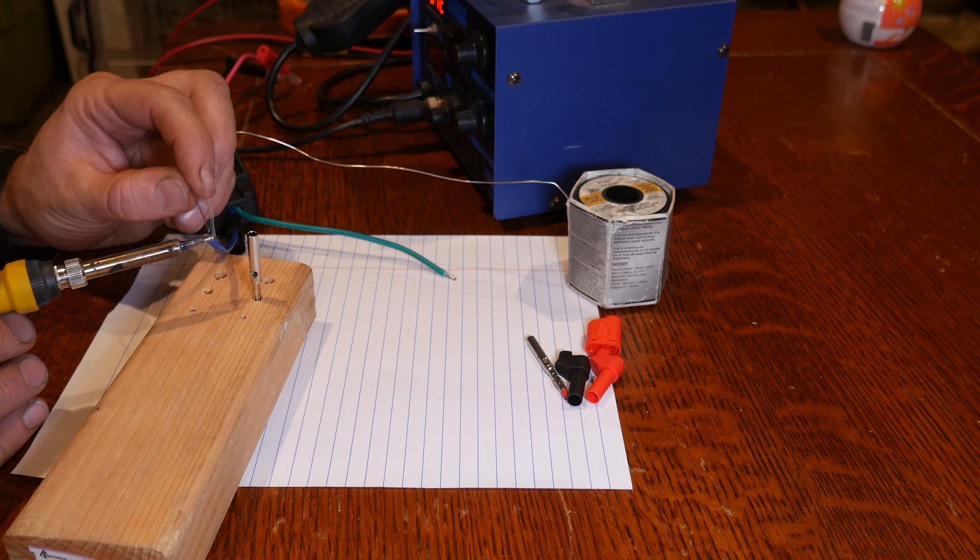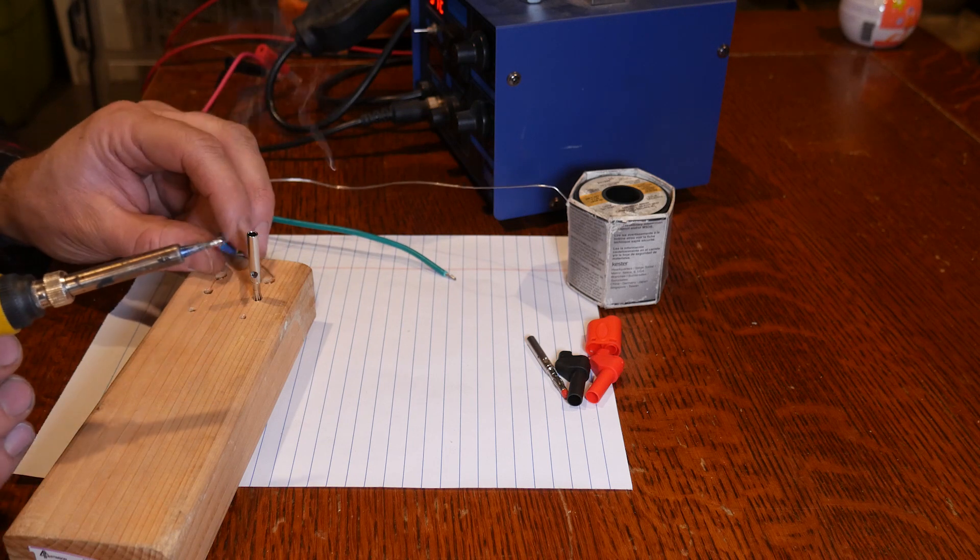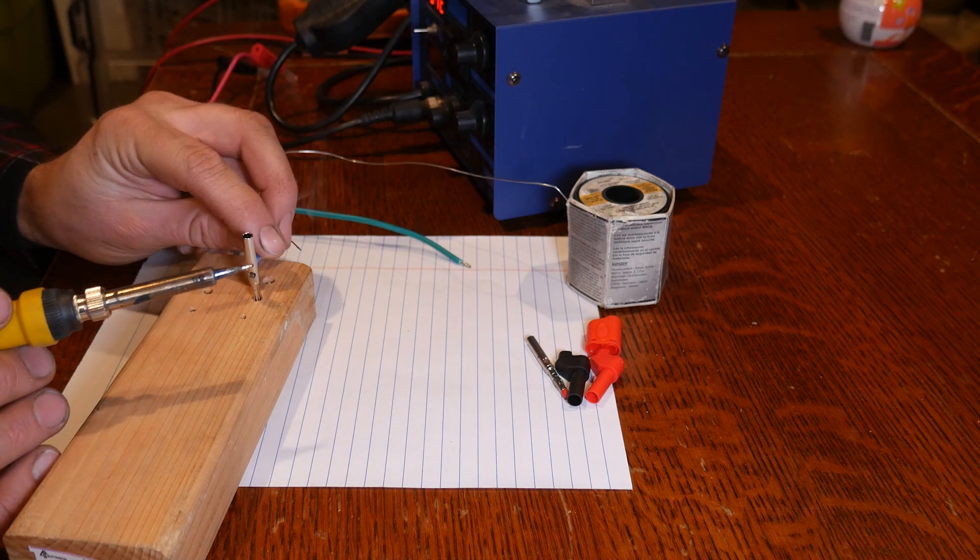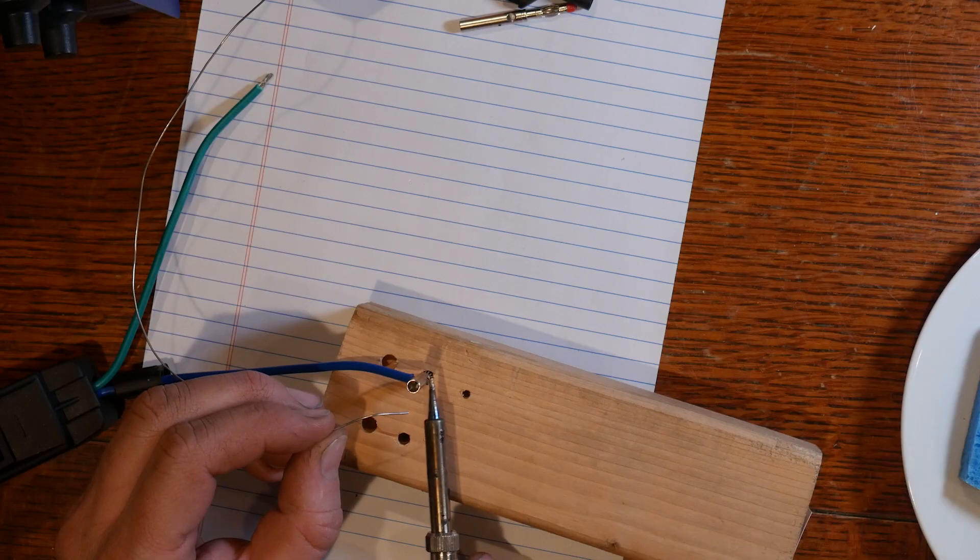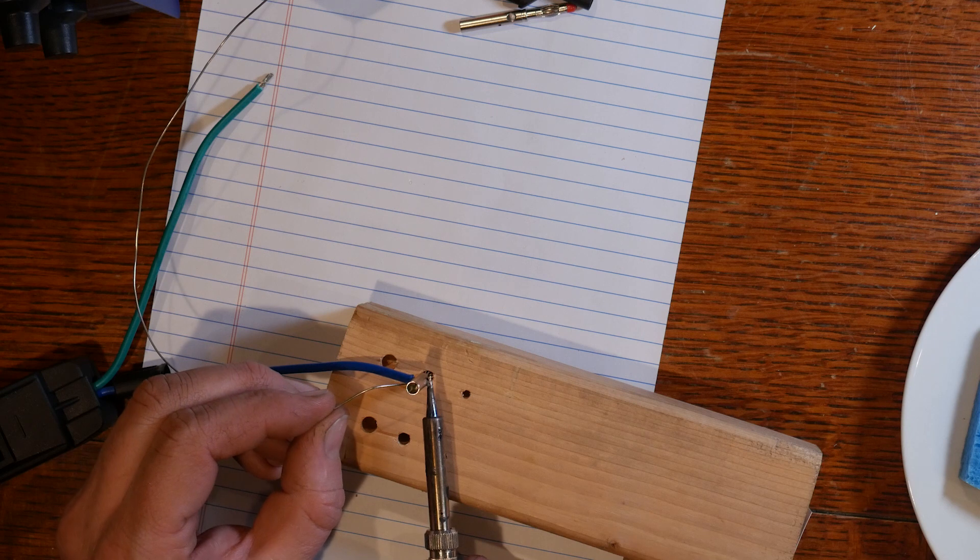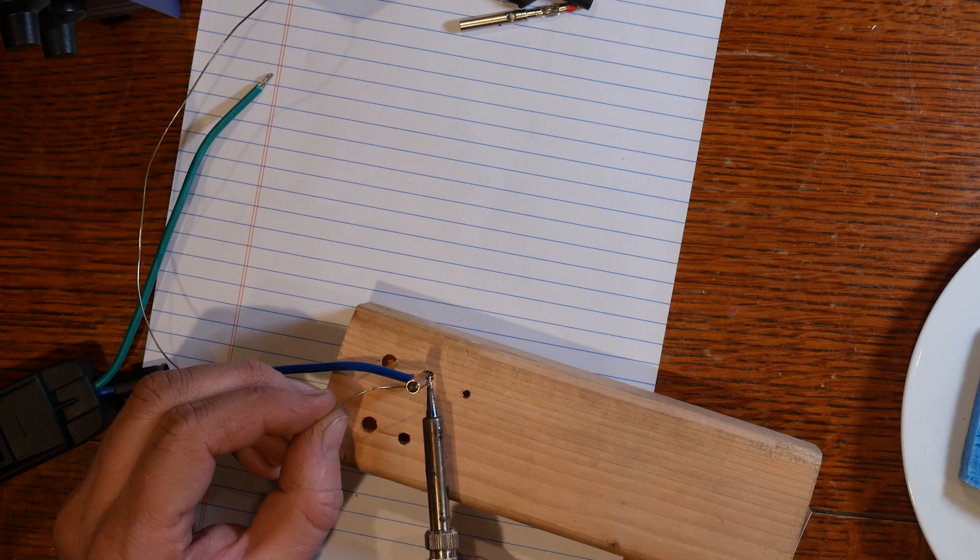And I'm melting the solder into the wire. You don't want to just glob it on there like up above. You want to heat up the wire enough that the solder soaks into the wire. Apply some heat.